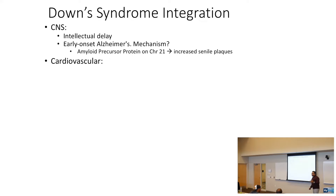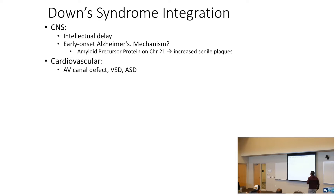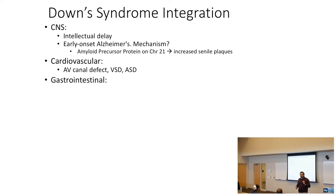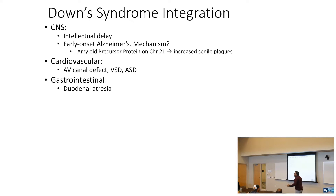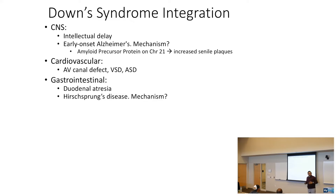The cardiovascular manifestations: endocardial cushion defect causing an atrial ventricular canal defect. VSD and ASD are also common in Down syndrome patients. Gastrointestinal manifestations include endocardial cushion defects and duodenal atresia, plus Hirschsprung's disease.